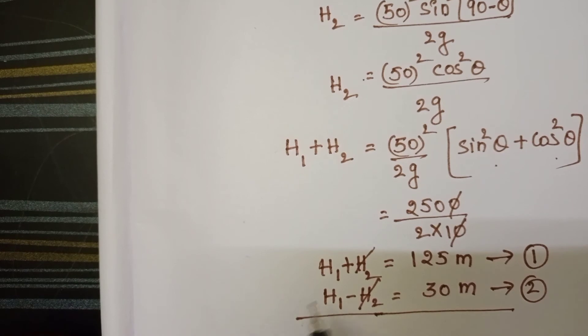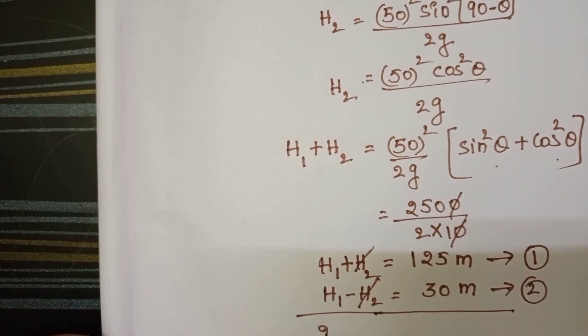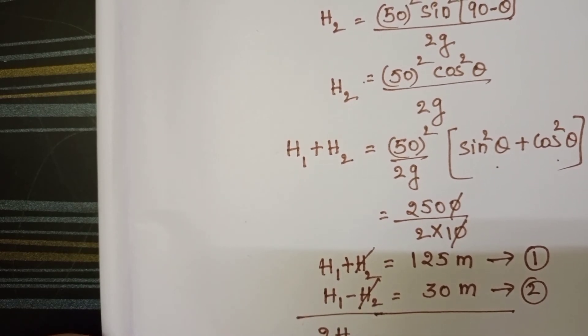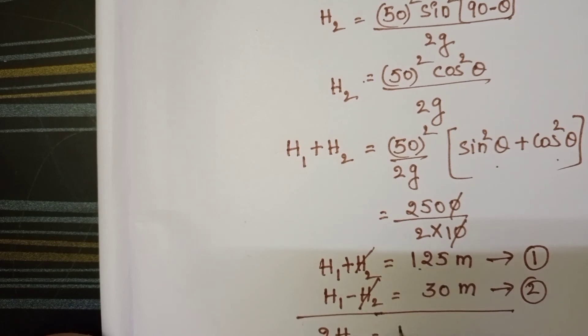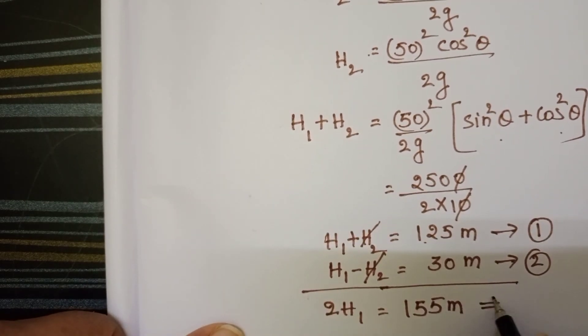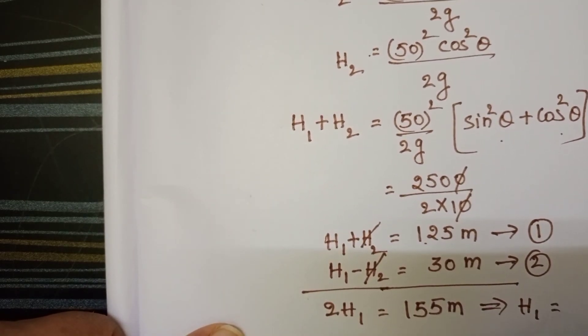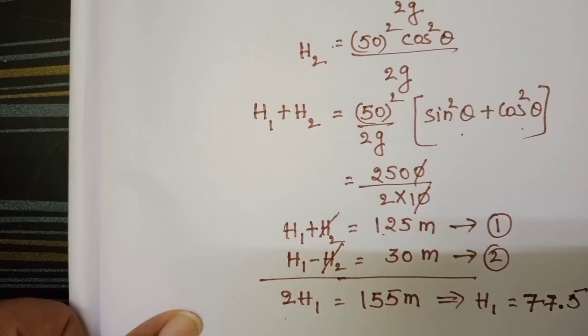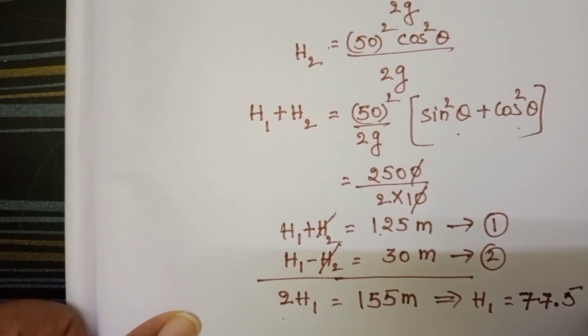H2 gets cancelled. H1 plus H1 equals 2H1. 125 plus 30 becomes 155 meters. And from this H1 equals 77.5 meters.